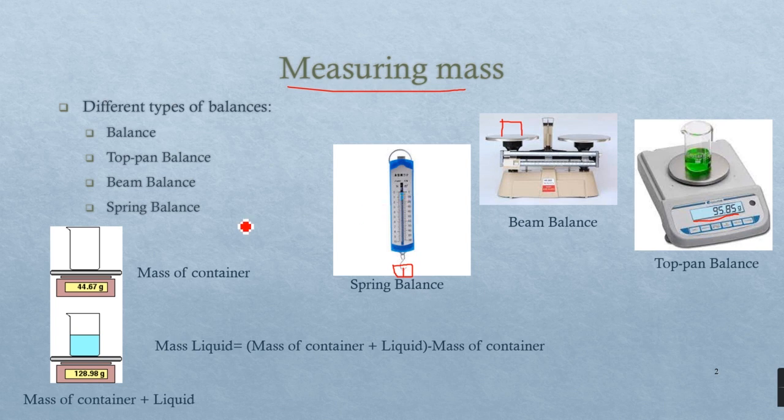If you want to measure the mass of a liquid, you need to measure it in a container. So first you need to get the mass of the container, and then add in your liquid, find the mass of the liquid with the container, and then you can subtract the mass of the container to get the mass of the liquid on its own.